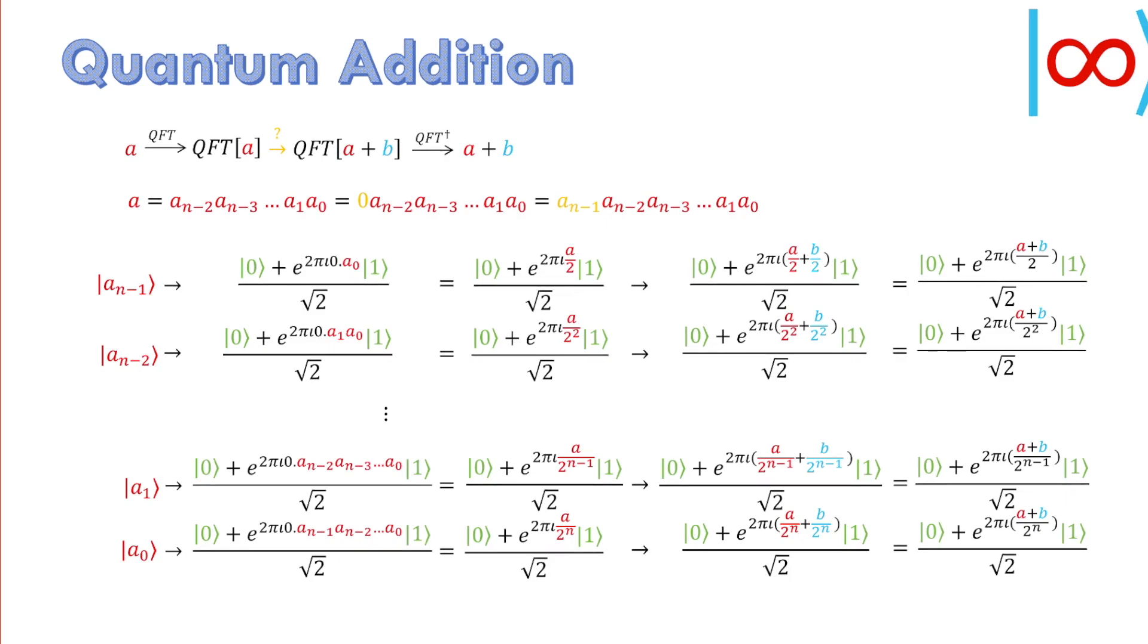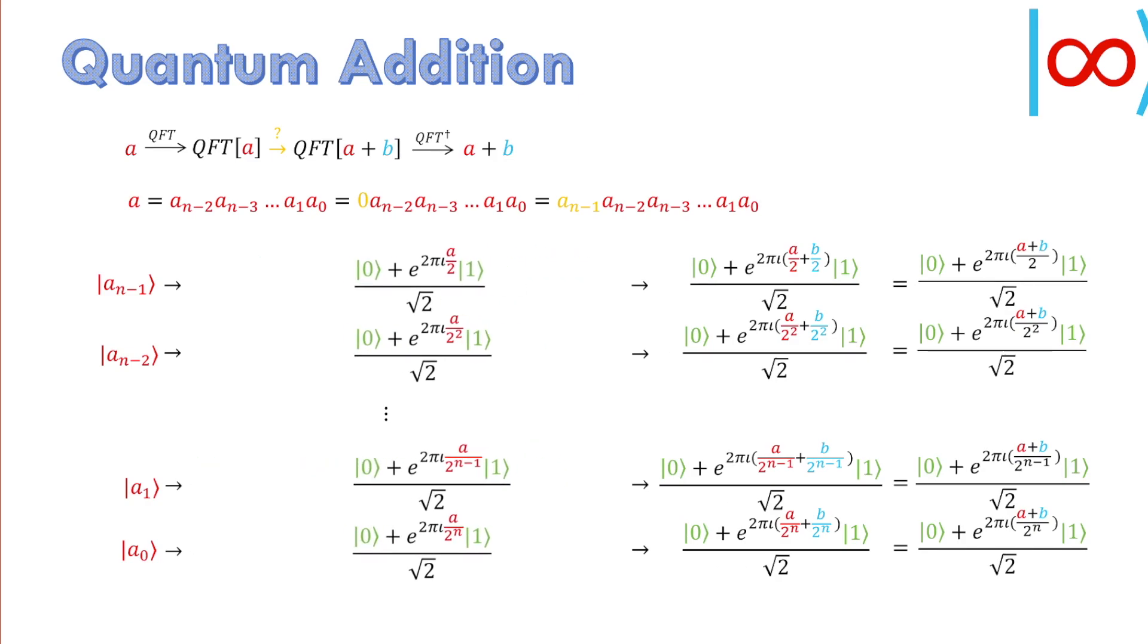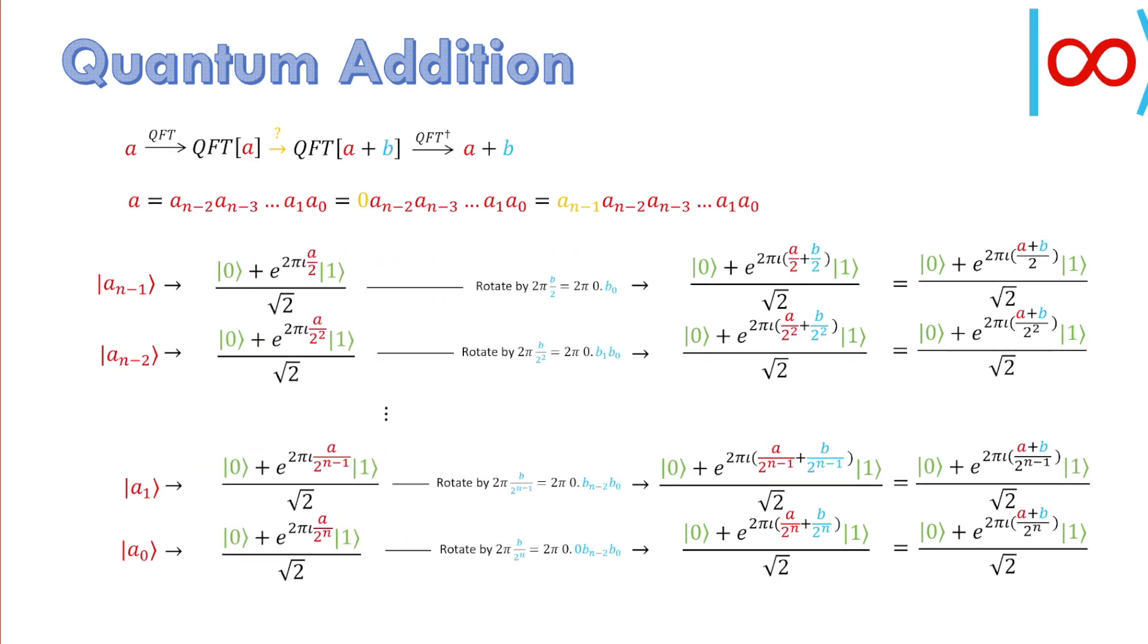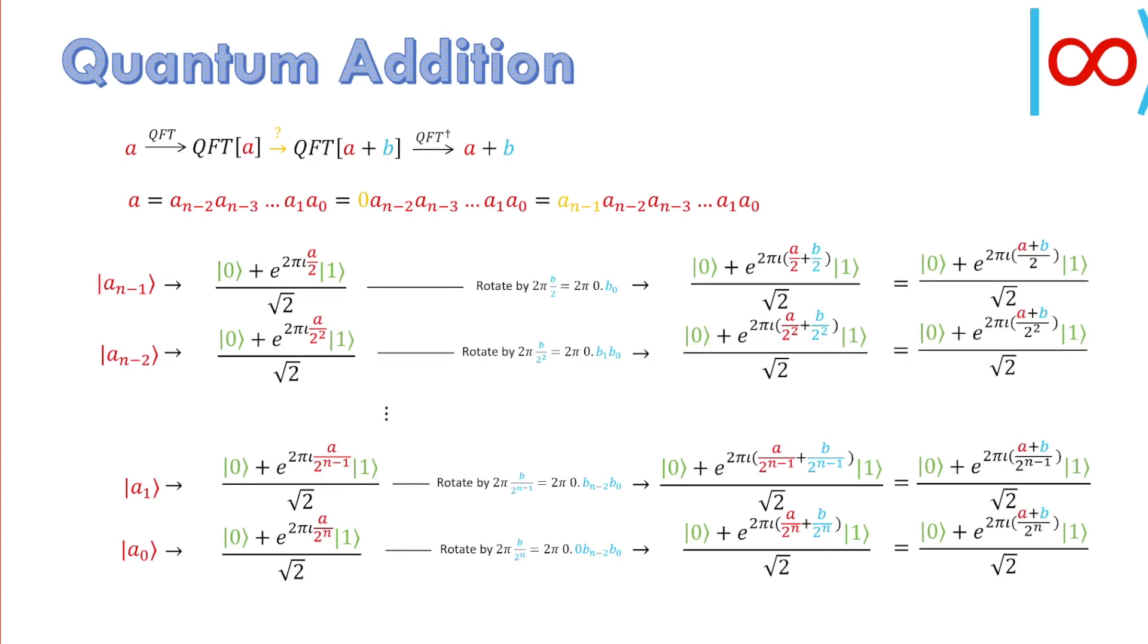The missing detail in our strategy is just controlled rotations of the qubits in the Fourier transform of a. We rotate individual qubits such that each exponential factor adds appropriately.